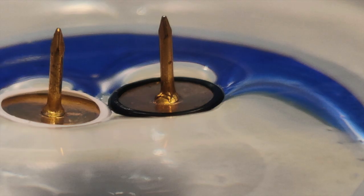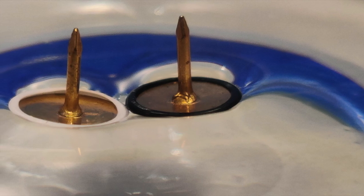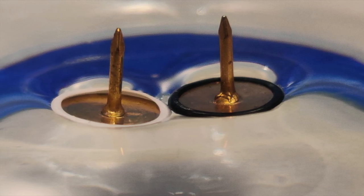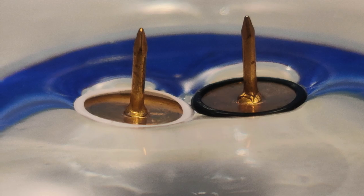This is because the thumbtacks are denser than water, while Cheerios are lighter than water. The reason the thumbtacks still float is because of the surface tension of the water.